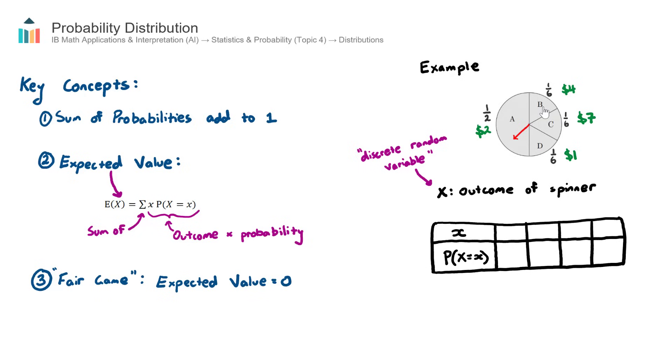It's discrete because when you land on a particular section, you can clearly see which one it is and you can count it. So you can get the $2 for A or the $4 for B. They're discrete, whole individual outcomes. Unlike a continuous random variable, which we don't actually cover in the AI course, that would be something like the height of a student or the speed of a car.